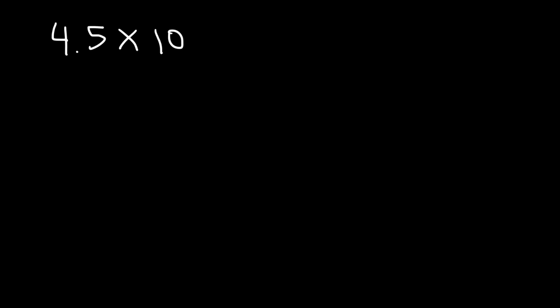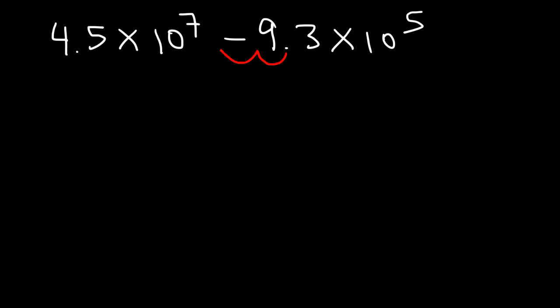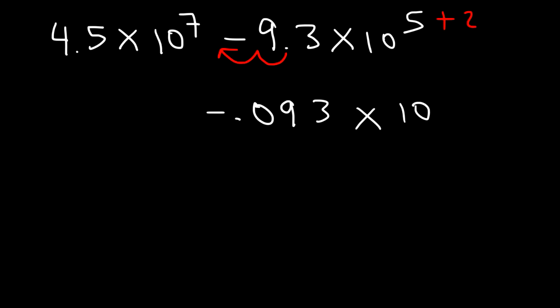Let's try one more: 4.5 times 10 to the 7 minus 9.3 times 10 to the 5. I'll move this decimal two units to the left to get a 7 exponent, increasing the exponent by 2. This turns 9.3 into 0.093, giving 0.093 times 10 to the 7.